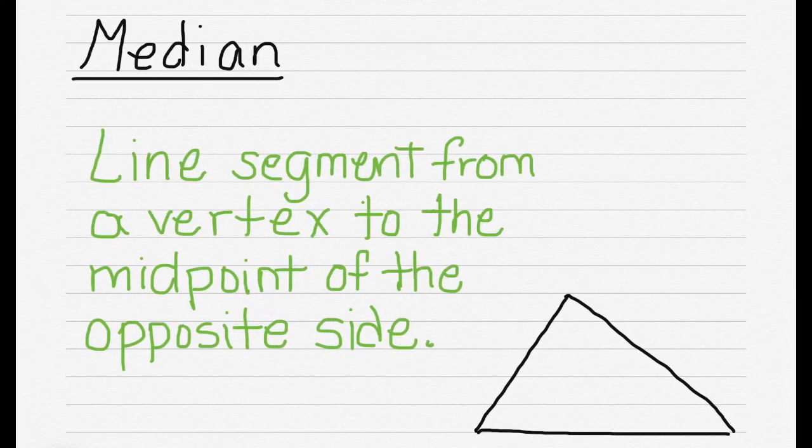The median is a line segment from a vertex to the middle of the opposite side, the opposite line segment. So here is one of the vertices in the triangle, and it goes to the opposite side in the middle of the line segment. The two dashes will indicate that they are equal sides.